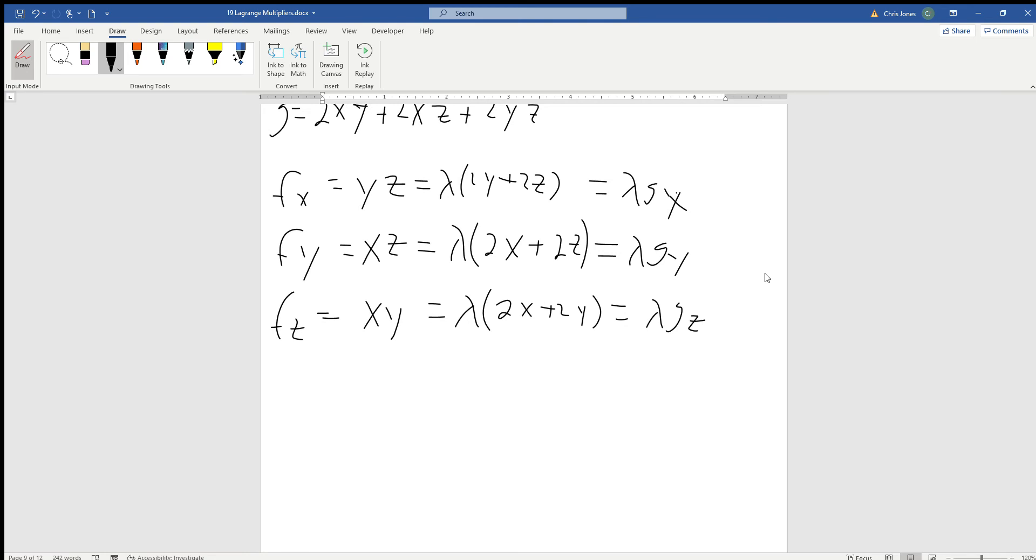Now we probably already have the premonition that x equals y equals z. However, we can't just go through and see that without verifying it. So a suggestion might be to solve each of the different variables in terms of each other or even solve for lambda, so we could set each of the functions equal to one another.